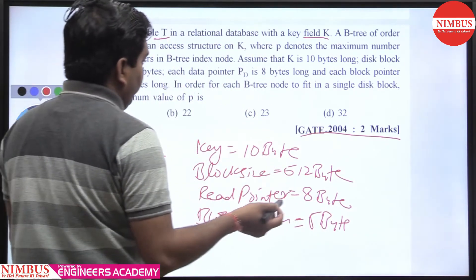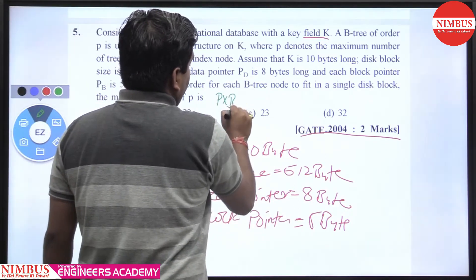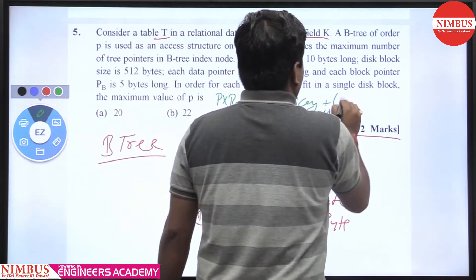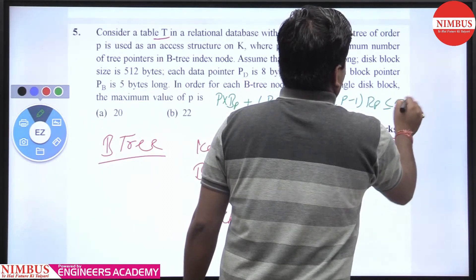So in B+ tree, what will happen if the order is P? Then it contains P block pointers, P minus 1 keys, plus P minus 1 record pointers, less than or equal to block size.